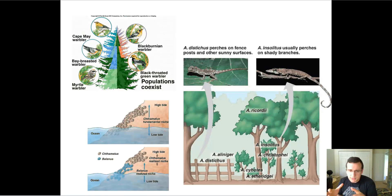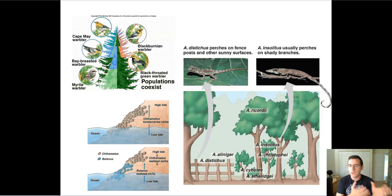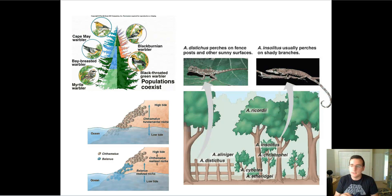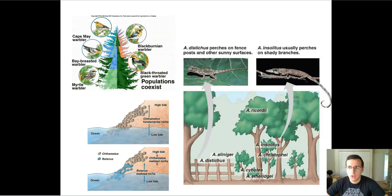This means that animals will be fighting for resources and splitting the resources in the environment. For example, there are several types of warblers that live in this kind of pine tree, but no single warbler lives exactly in the same place as the others — they kind of split the tree up. One lives in this area, another lives in that area, another in this area. Each of them takes a different area of the tree.